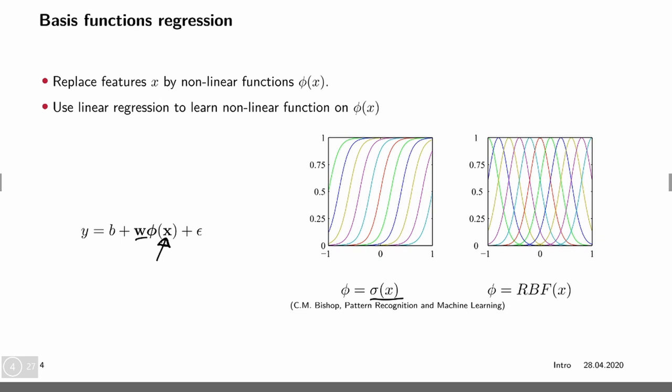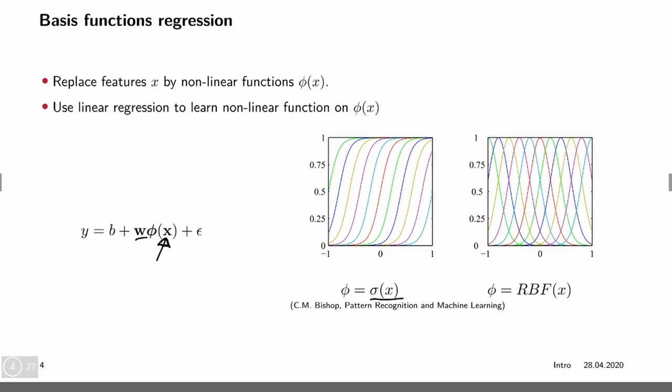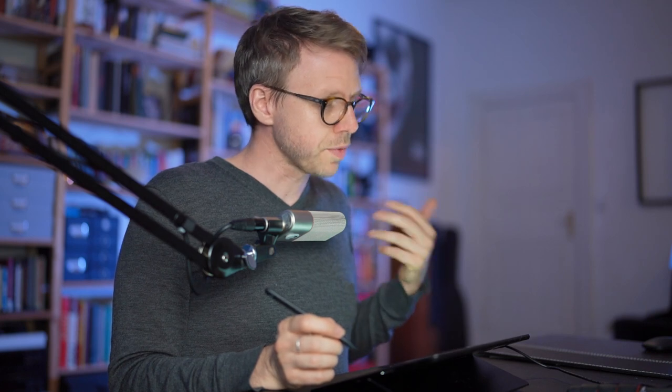There are also other forms of basis functions, for example these bell curves called radial basis functions. The idea is extremely similar. This is a way to take linear regression and make it non-linear. You could also do the same for logistic regression by taking P of class 1 equals sigmoid of B plus W phi of x. Then you would have something that corresponds to a class probability. What we have done is basically put a function into another function, one linear and one non-linear.